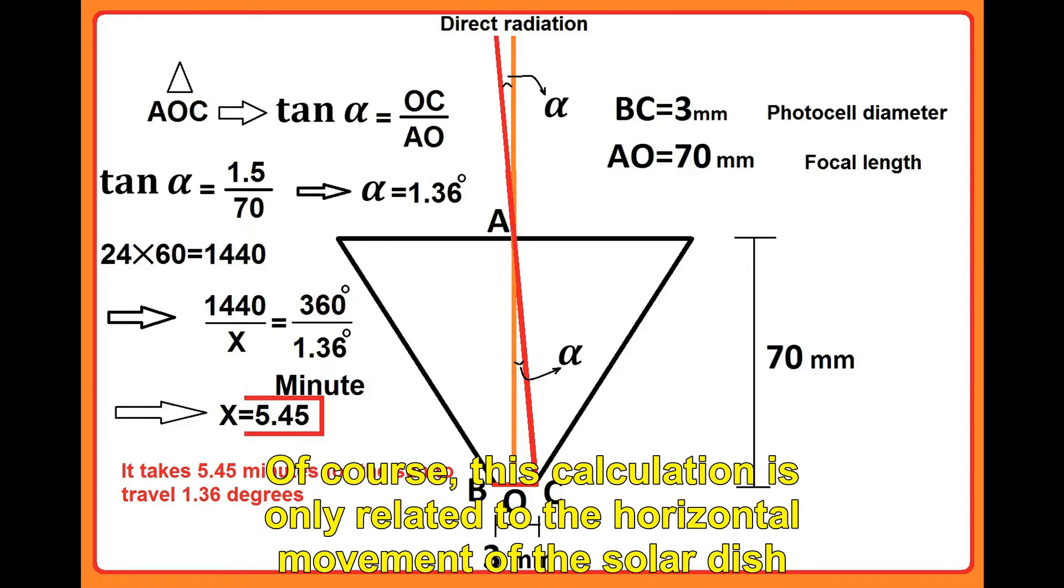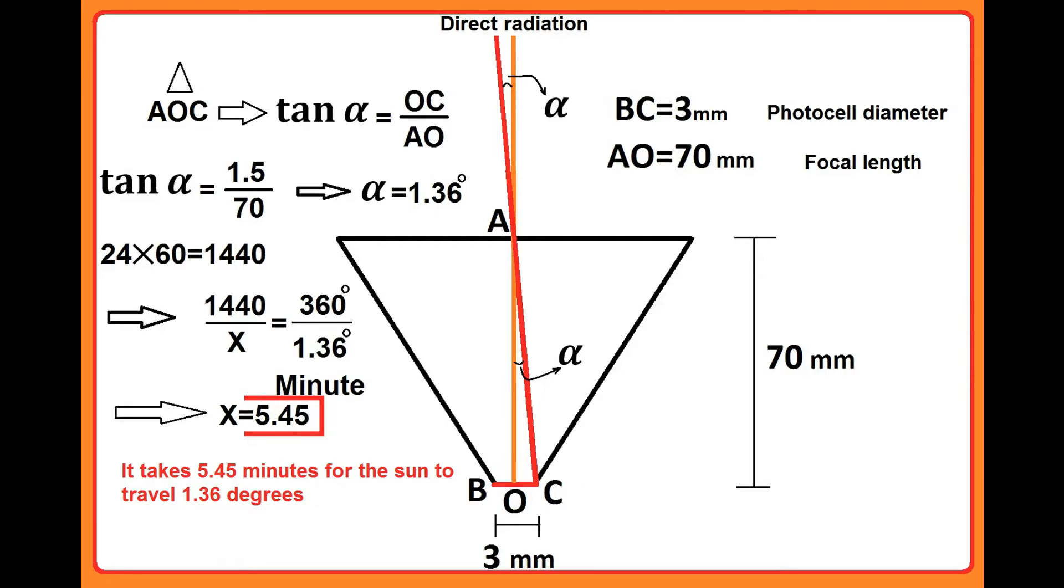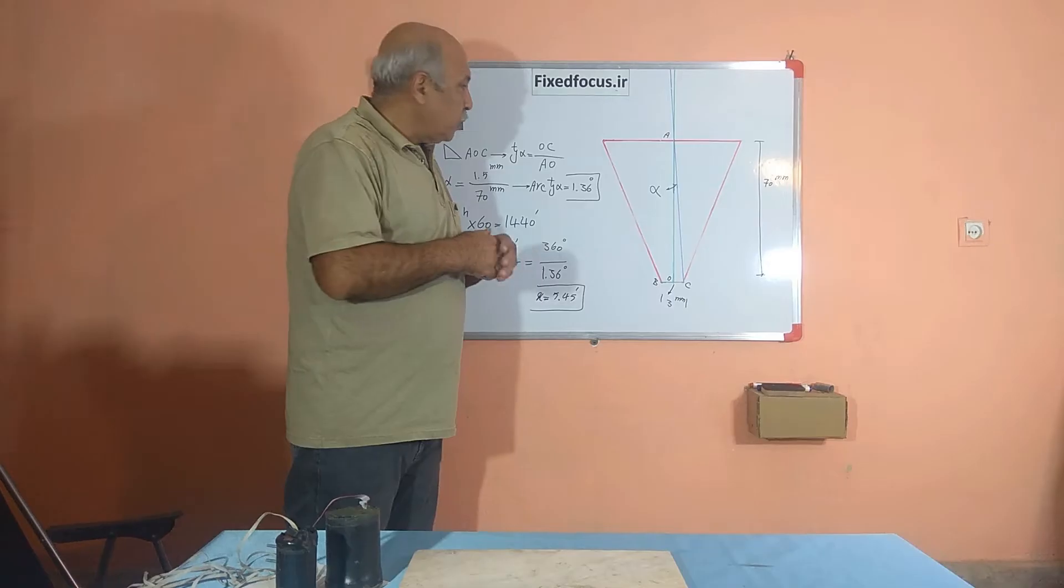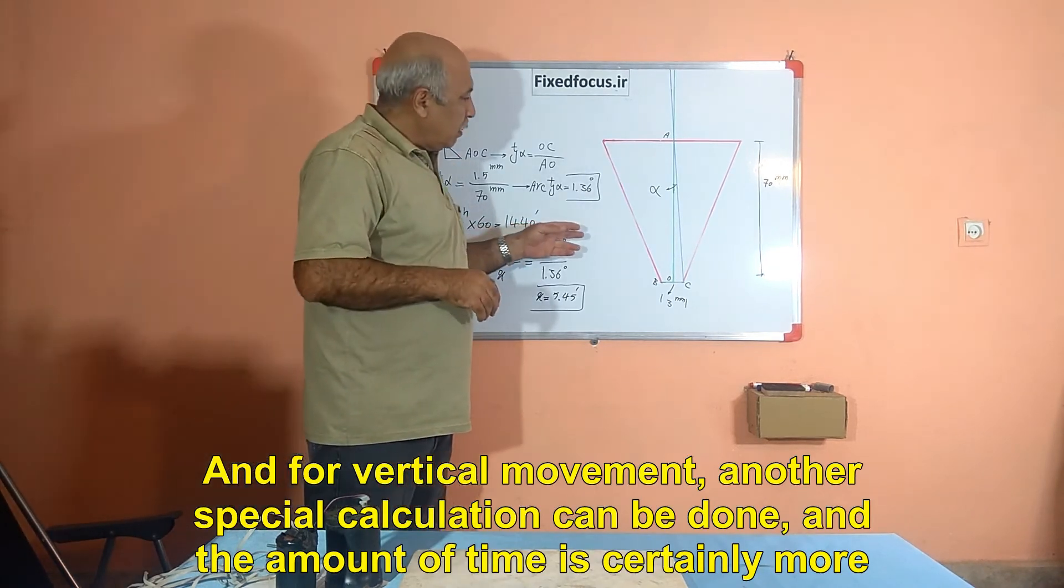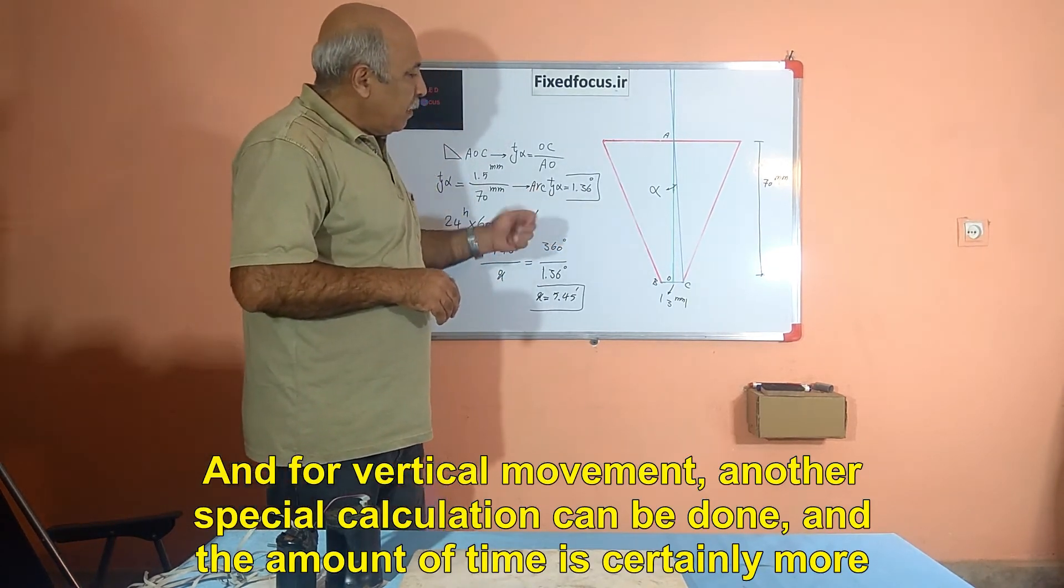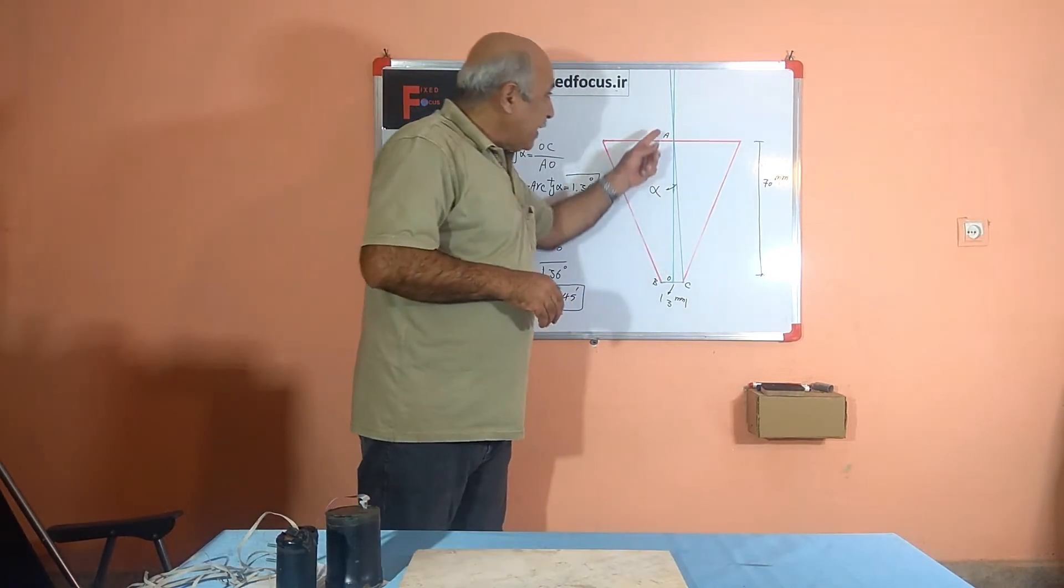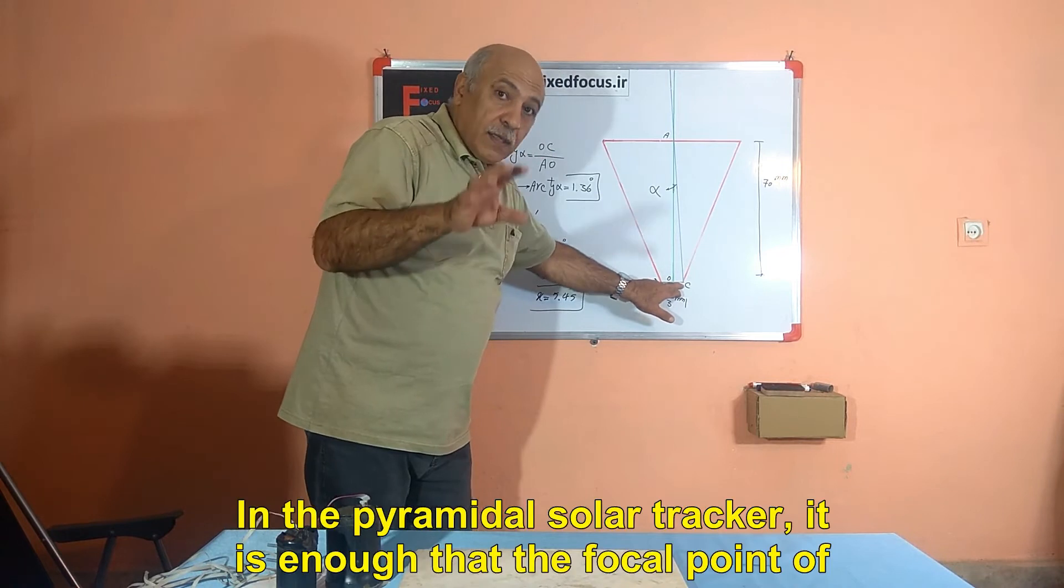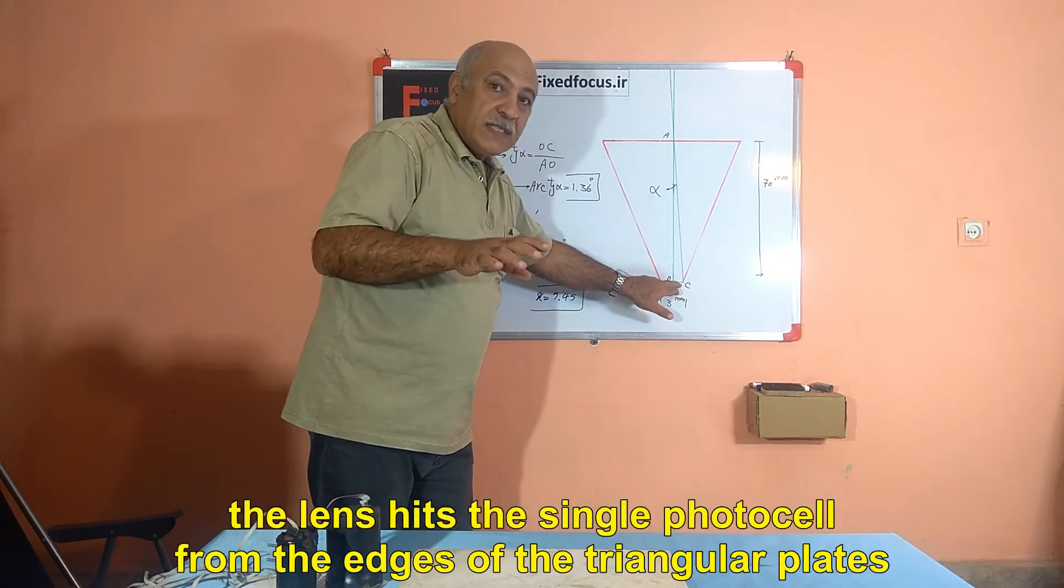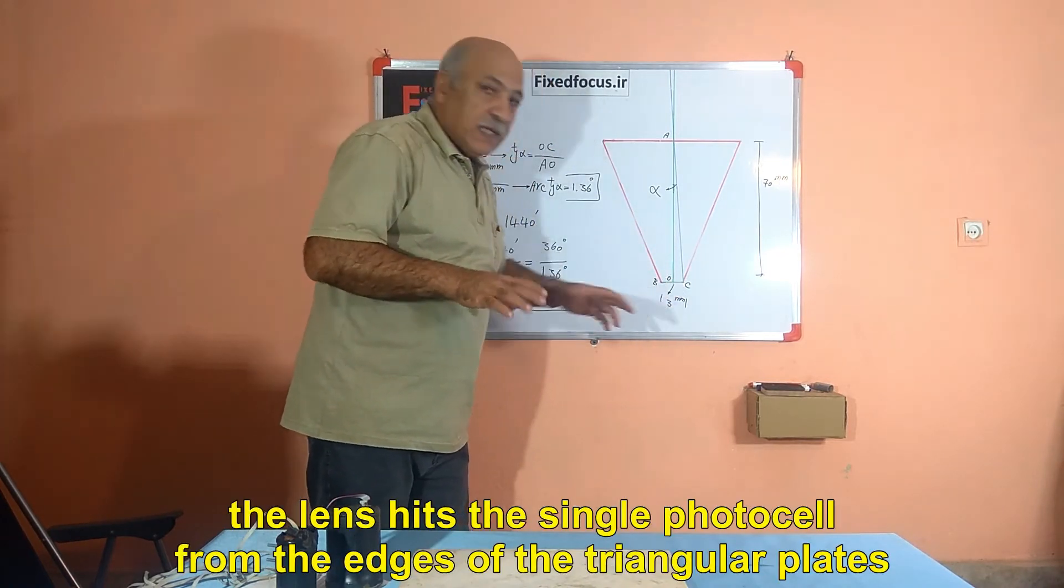Of course, this calculation is only related to the horizontal movement of the solar dish. And for vertical movement, another special calculation can be done, and the amount of time is certainly more. In the pyramidal solar tracker, it is enough that the focal point of the lens hits the single photocell from the edges of the triangular plates.